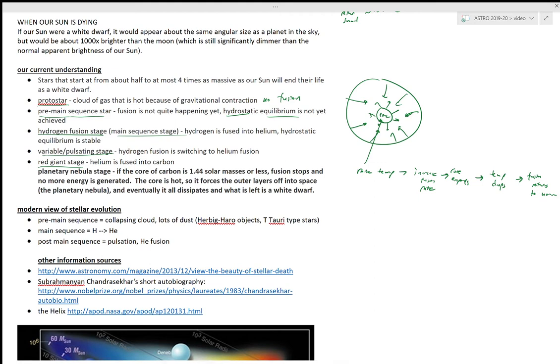Then that core, once you build up enough carbon, if the core is 1.44 solar masses or less - the Chandrasekhar limit - fusion stops. No more energy is generated. The core is hot so it forces the outer layers off into space through all the ultraviolet radiation. That's the planetary nebula part.